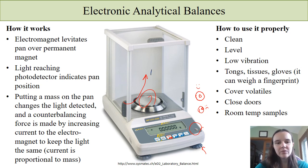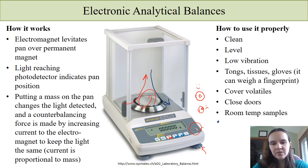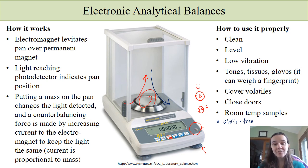If you have a cold sample, you're going to get a downdraft and that's going to make your sample weigh a little bit more. You also want to avoid static. Sometimes you're using a sample — and this will happen a lot in the winter — and your mass will just drift. That can be because you've got static electricity in your sample, and because this is an electromagnet, the static electricity can cause some problems.